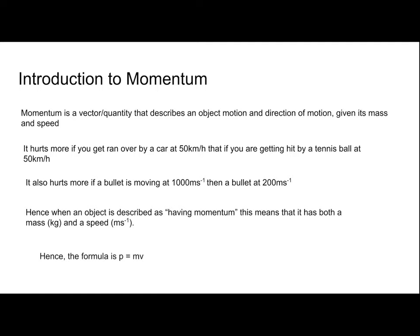The formula for momentum is p = mv. The little p stands for momentum, m is mass measured in kilograms, and v is velocity measured in meters per second. So momentum is measured in kg·m/s — since mass is in kilograms and velocity is in meters per second, you multiply them together and that's your unit for momentum.